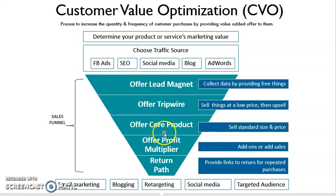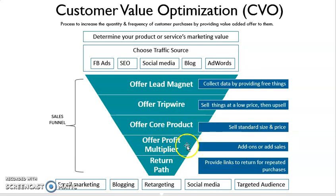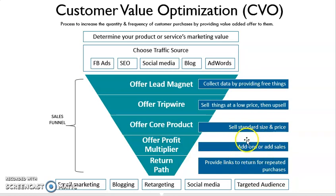After we offer them the core product and they are our customers, now we are trying to make more profit from them. So we are offering them a profit multiplier — meaning that we sell add-ons to them. From these add-ons, we can get extra profit and extra sales.